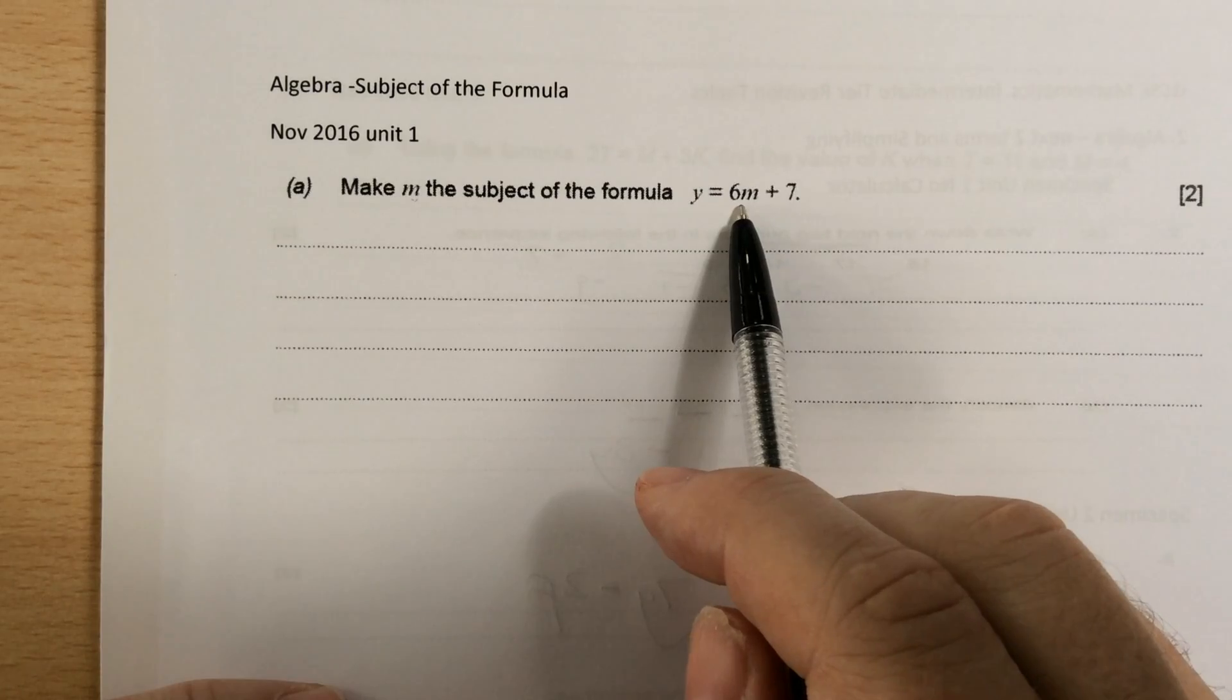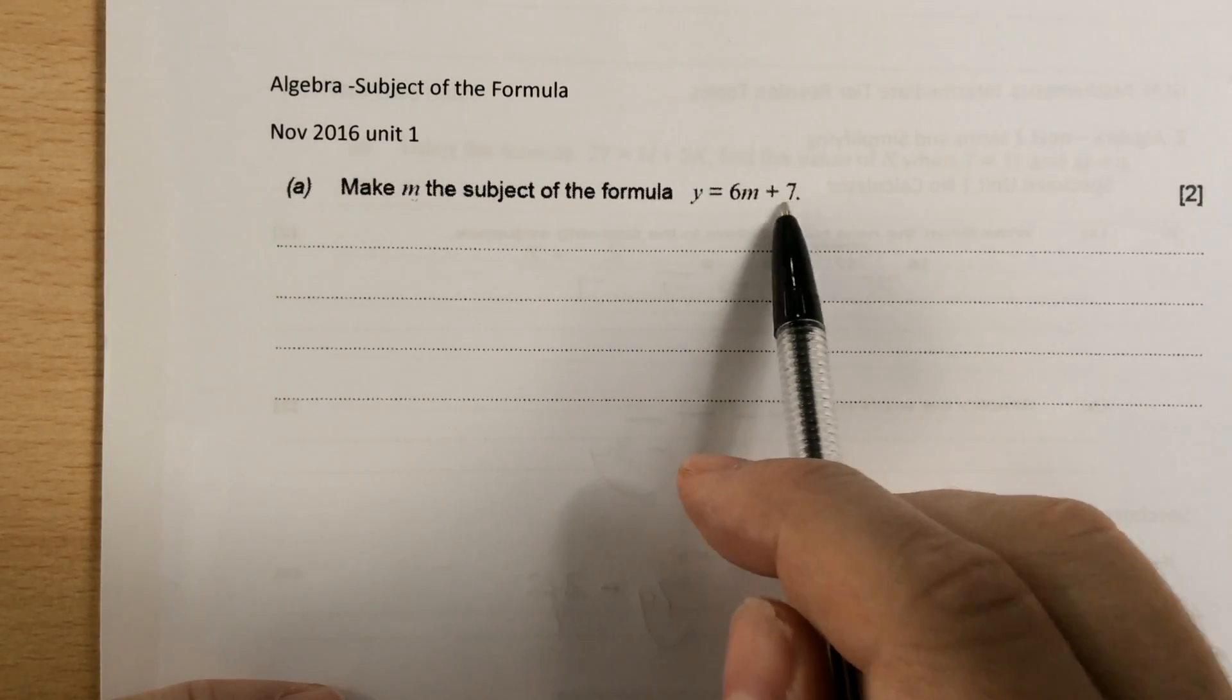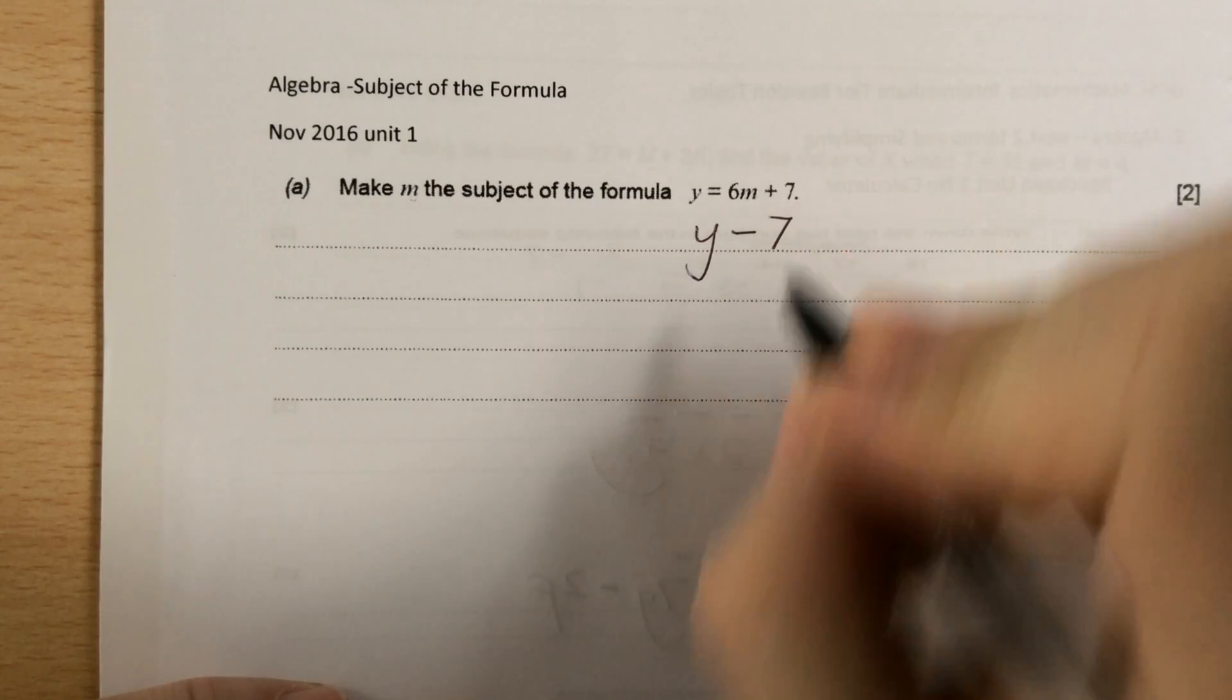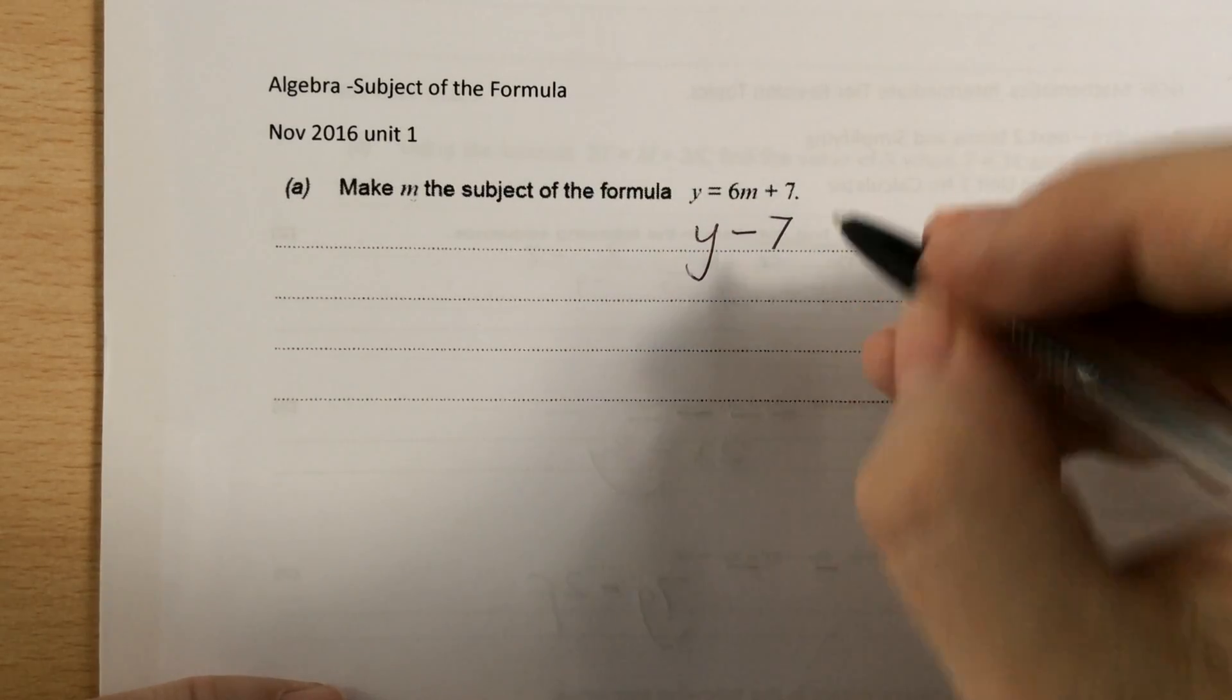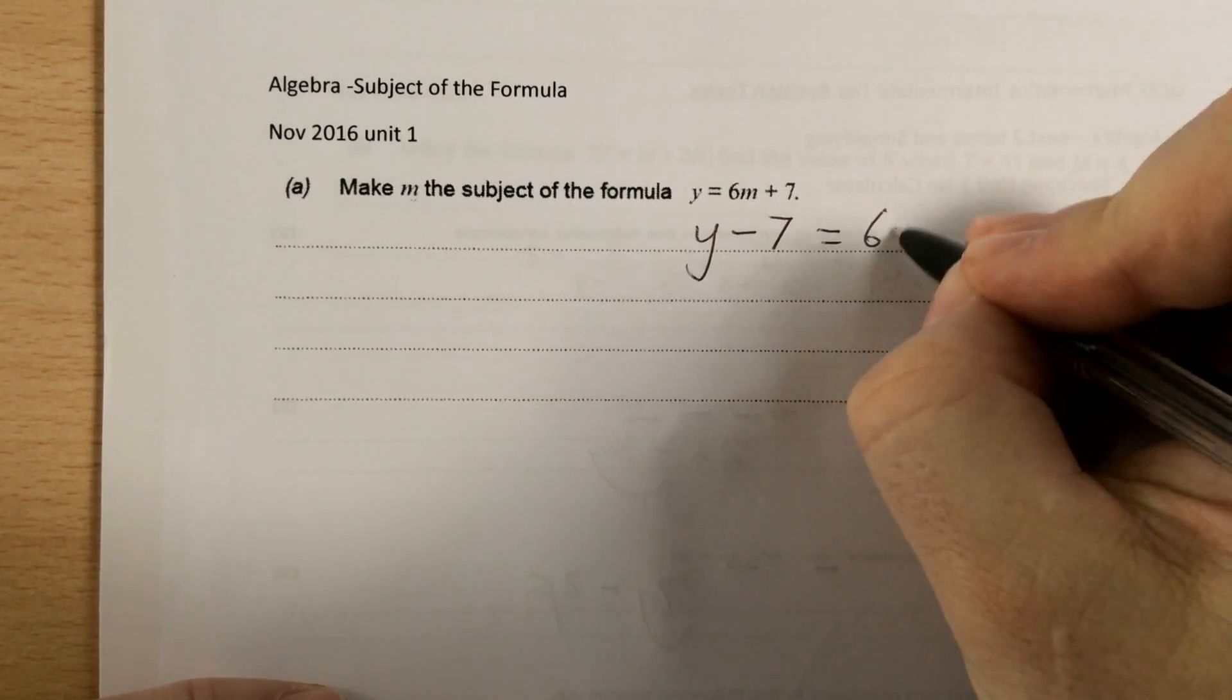Because you want to find what M is, you've got to rearrange the equation. The opposite of plus 7 is take away 7, so it becomes y take away 7 equals 6 times M.